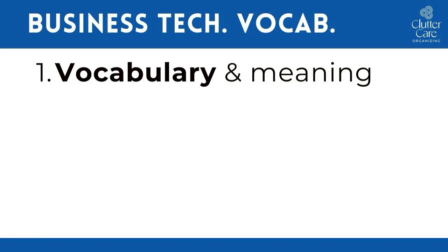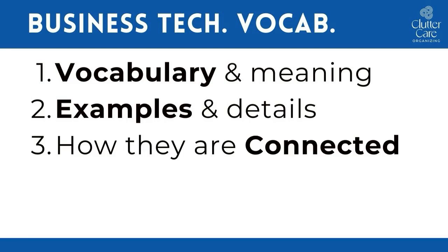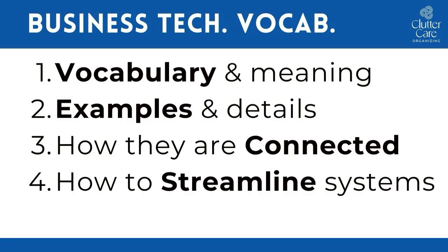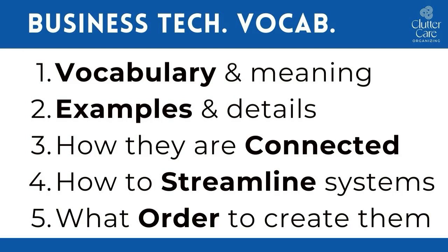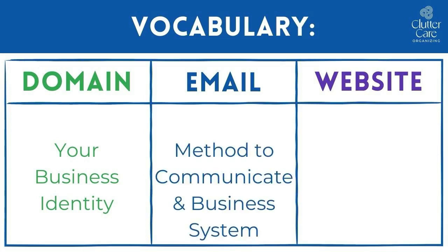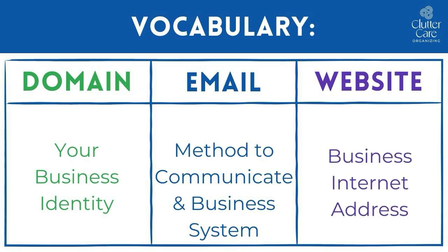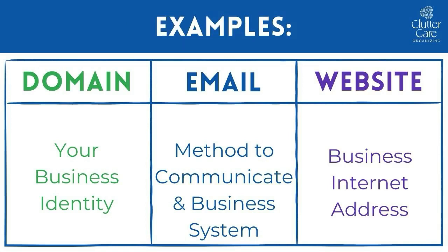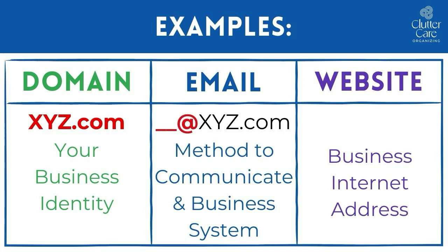In this video, I will explain each of these vocabulary words and their meaning, some examples and details about each, how they are connected, how to streamline your systems, and stick around to the end so you know what order to create them. Your domain name is your business identity. Email is used to communicate with each other, but it is also the foundation of your business system that you choose to use, which includes many other apps. Your website is your business internet address where people can find you on the internet. For example, your domain name is xyz.com, your email is yourname@xyz.com, and your website is www.xyz.com.